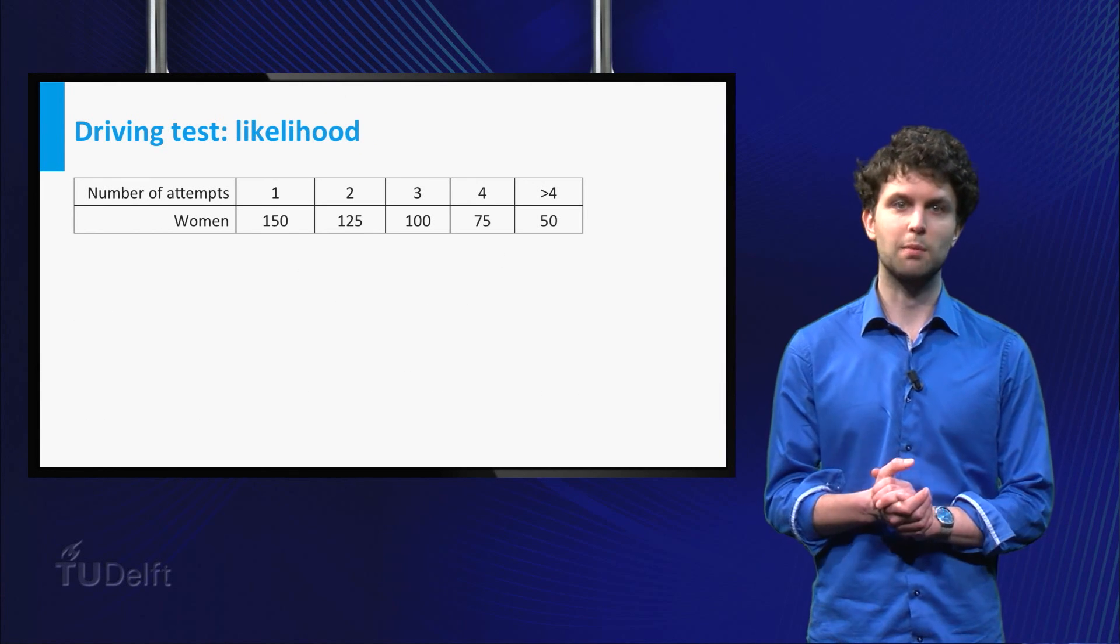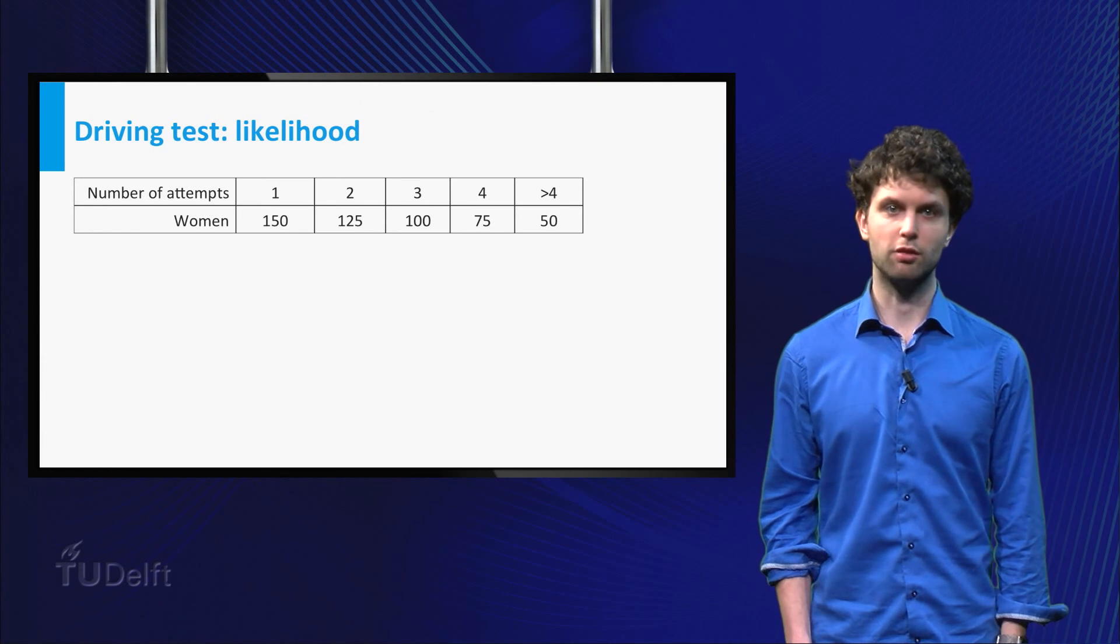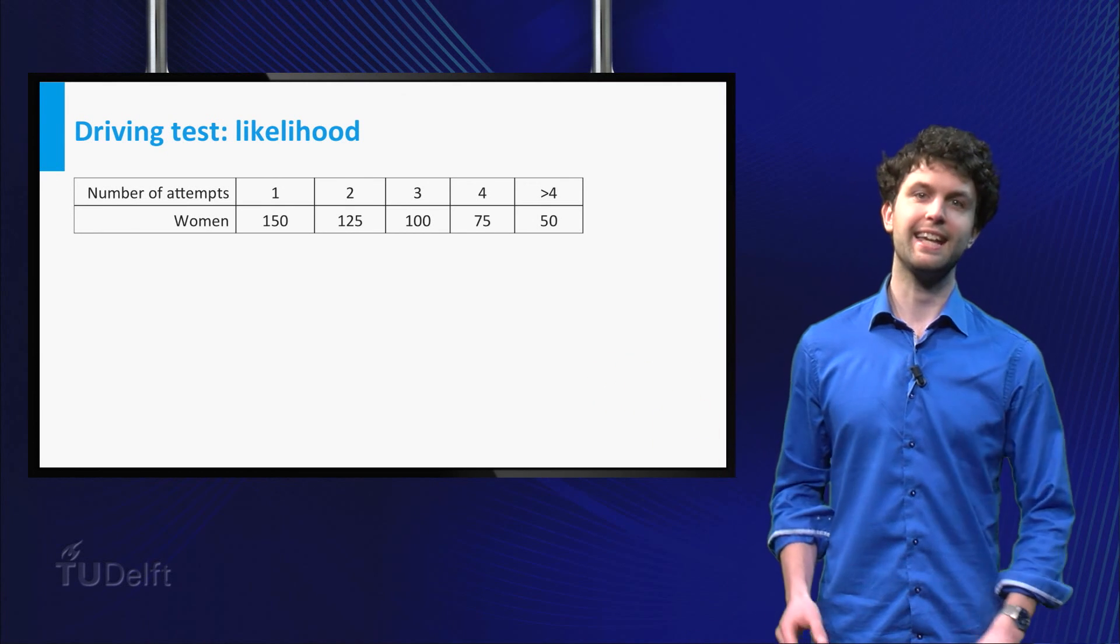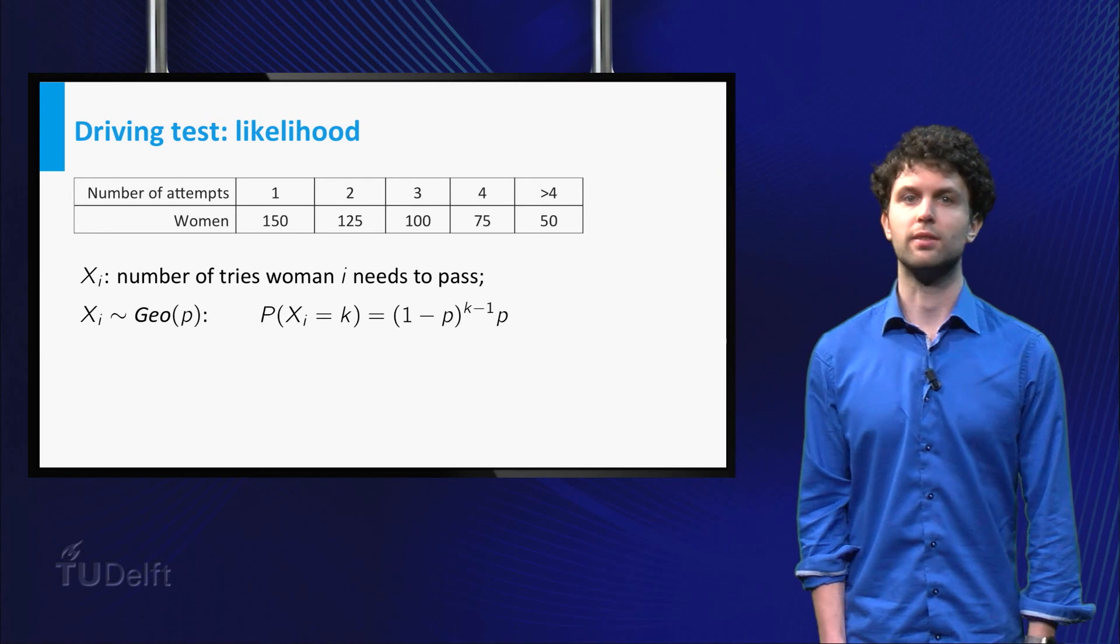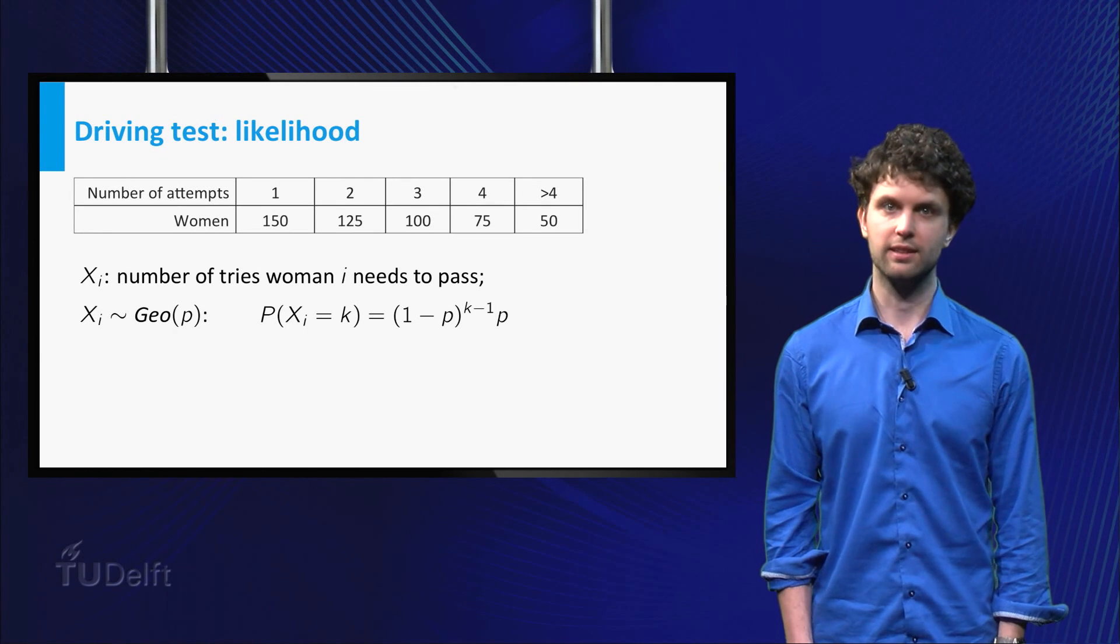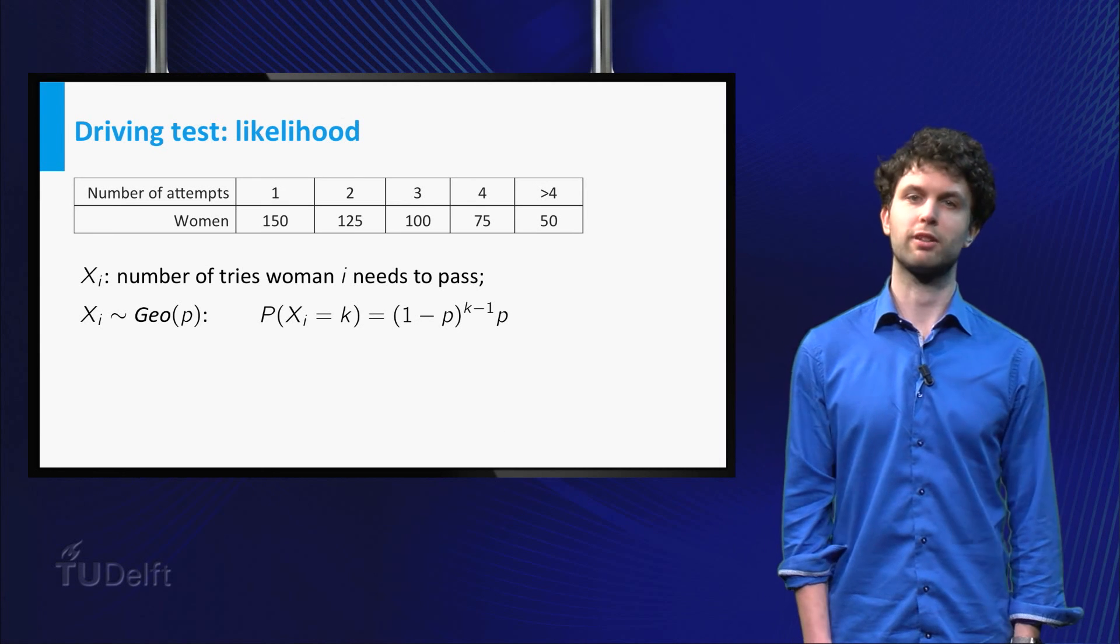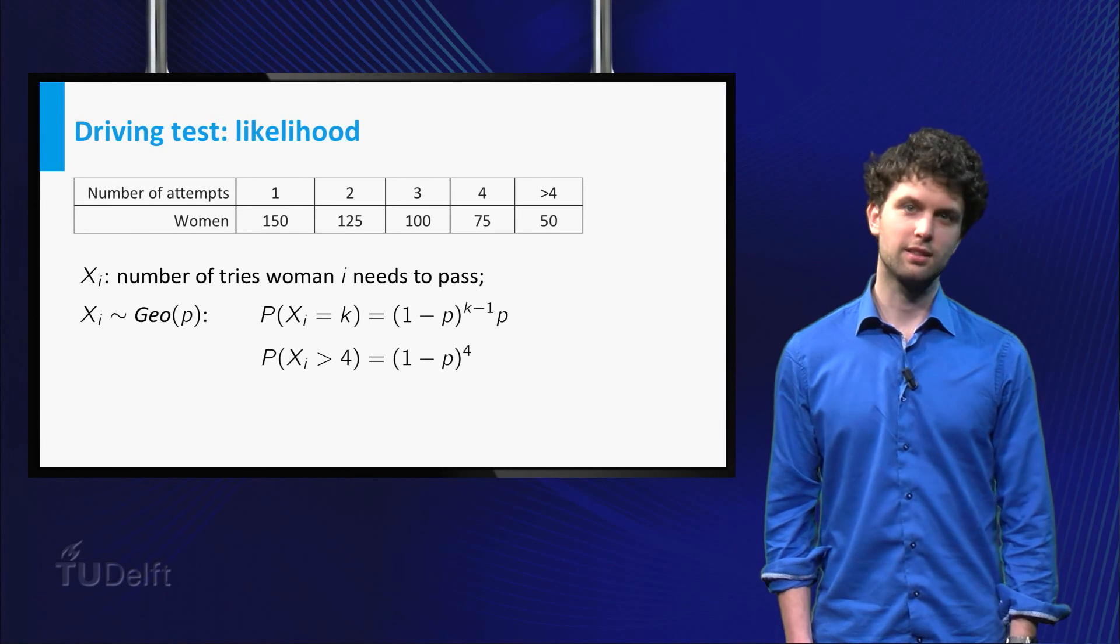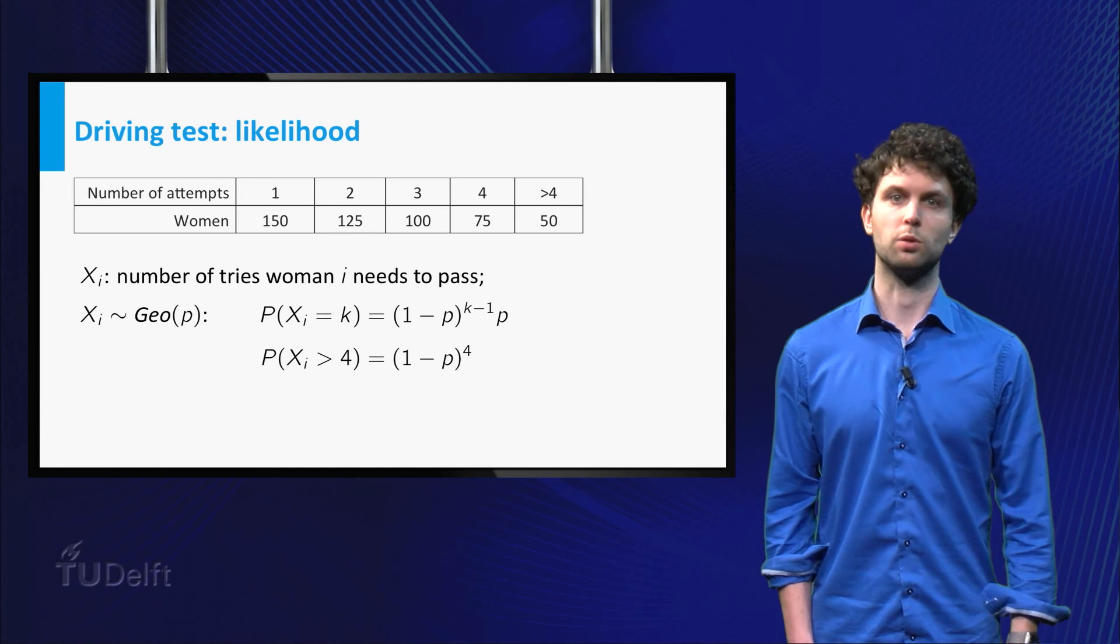Now, let's apply the maximum likelihood principle. Remember, that means that we want to find the value of P such that the data, here the table with results, is most probable. Denote by Xi the number of tries that woman i needs to pass her driving test. Then all Xi have a geometric distribution, as already mentioned. In particular, the probability a woman needs at least 5 tries is 1 minus P to the power 4.